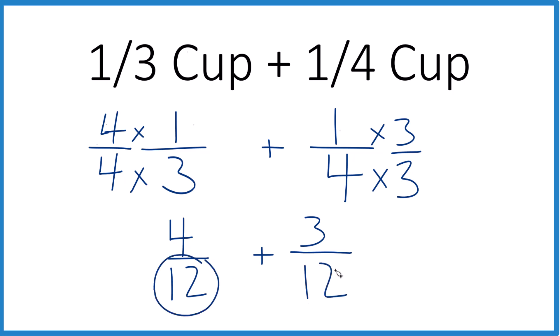Now this number's the same here. So we're just going to keep that the same. And then we add the numerators. 4 plus 3 is 7. And you end up with 1/3 cup plus 1/4 cup is 7/12 of a cup.